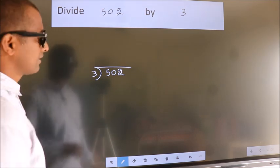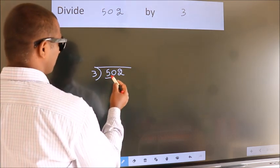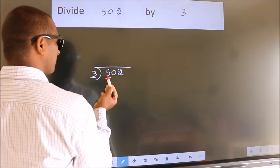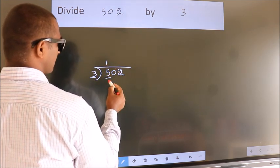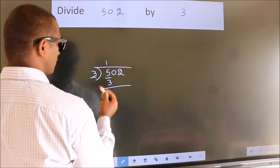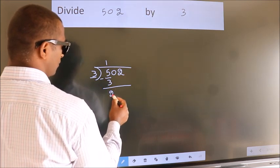Next. Here we have 5, here 3. A number close to 5 in 3 table is 3 once 3. Now we should subtract. We get 2.